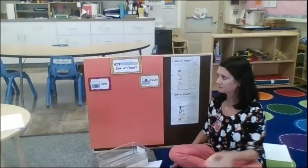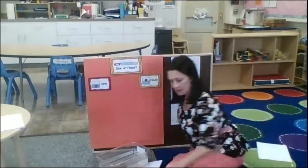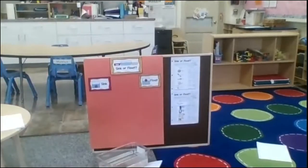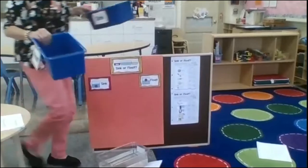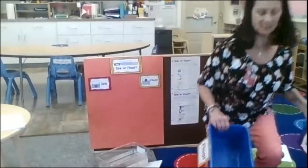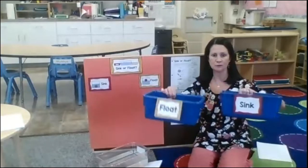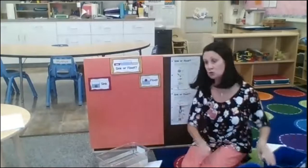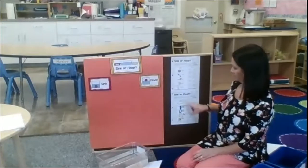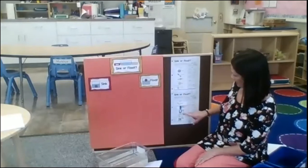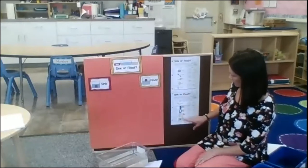Today what we're going to do is: I have a few things that I gathered up and we're going to see if they sink or float. Then after we see, we're going to put them in the correct bin — either sink or float — and then we're going to graph them on our graph. You have these materials at home. I used some that were suggested and drew in some others that I found around the classroom.